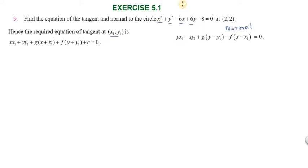For the normal equation, first we need the circle's general equation: x² + y² + 2gx + 2fy + c = 0.